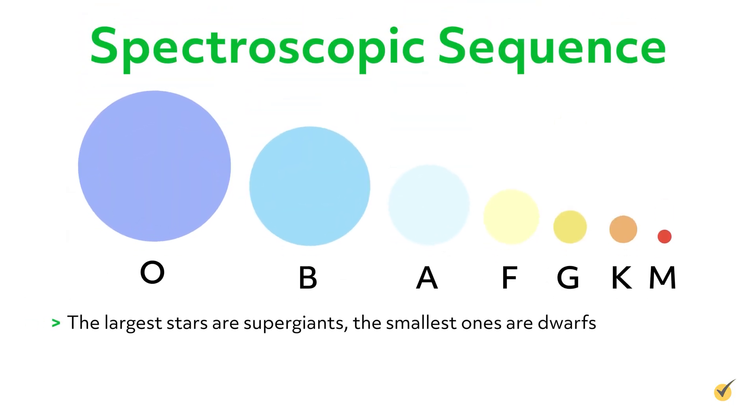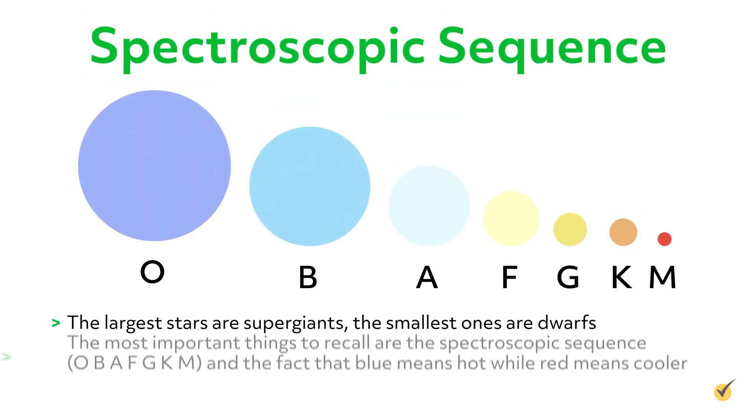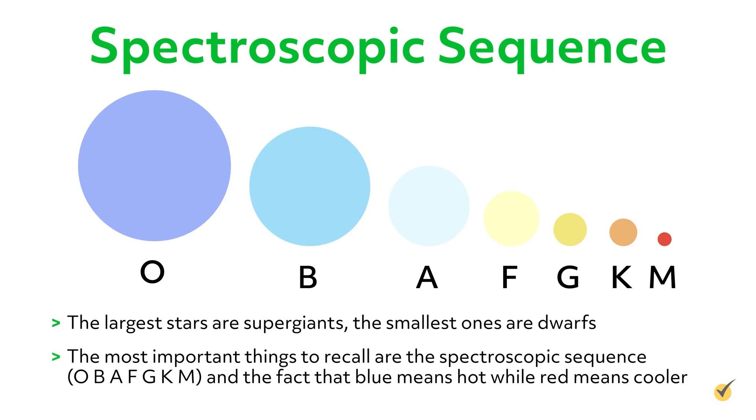To those studying stars, astronomers have been fairly kind in that stars are mostly given descriptive names. The largest ones are supergiants. The smallest ones are dwarfs.